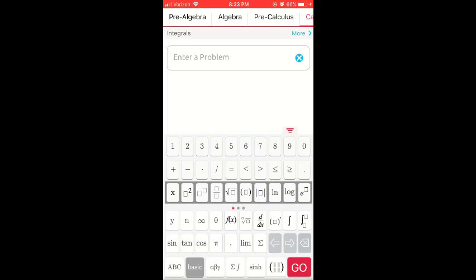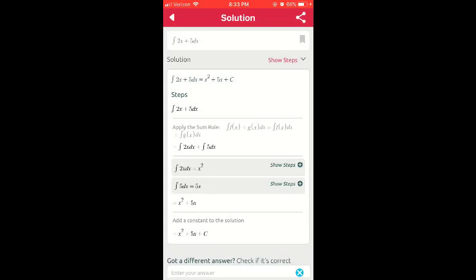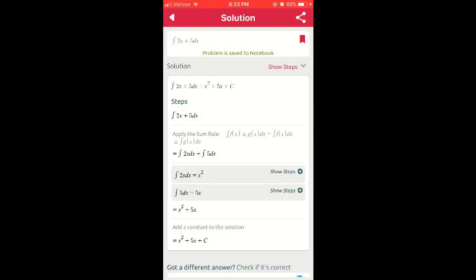Type in your problem and click go when you're done. Now click the save tag on the right to save the problem, and click it again to unsave the problem.